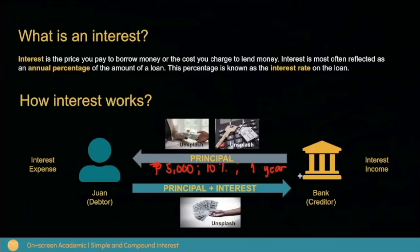The amount of interest computed in the perspective of the debtor is an expense, meaning on top of the 5,000 pesos loaned amount, the 10% interest will be an additional cost to him. Whereas, in the point of view of the bank, 5,000 pesos will be received at the maturity date and the maturity value will include the 10% interest after a year.